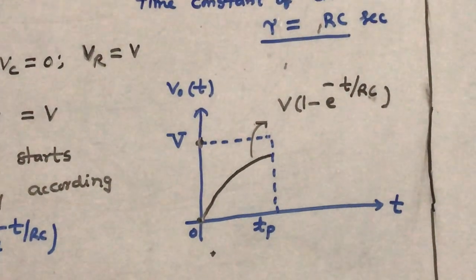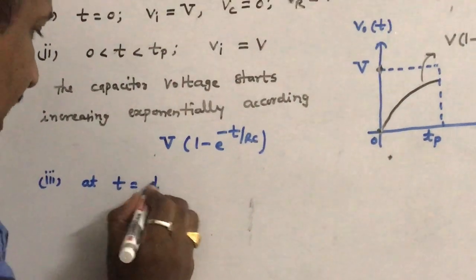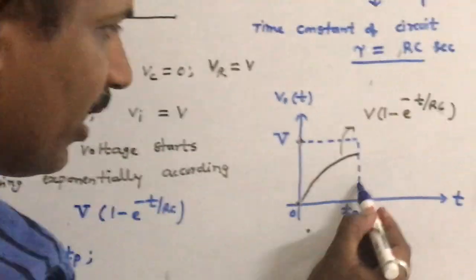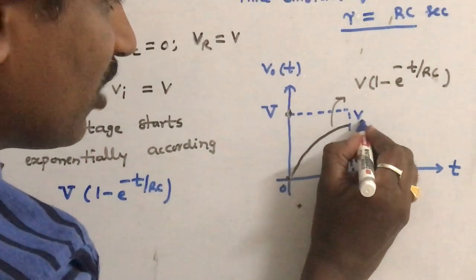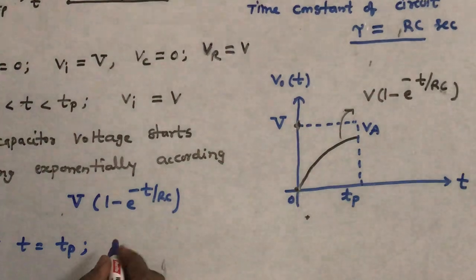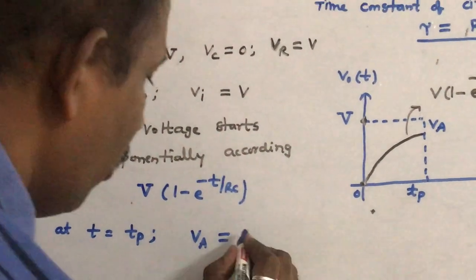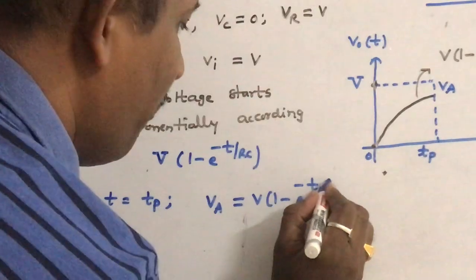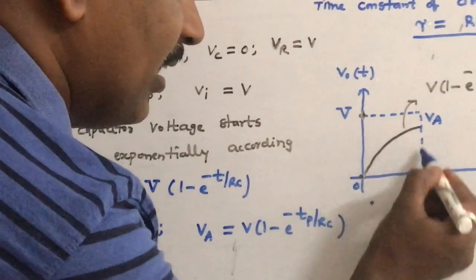At T equals Tp, let us find the output voltage. The voltage across the capacitor at T equals Tp — let us call this voltage Va. So Va equals V into (1 minus e power minus Tp by RC). This is the voltage across the capacitor at that time.